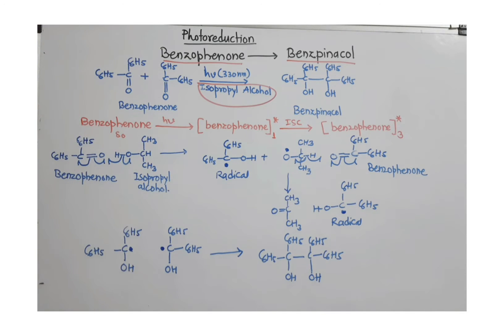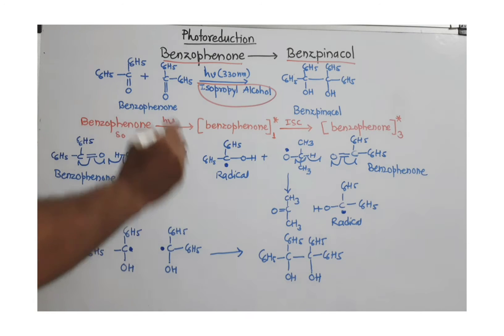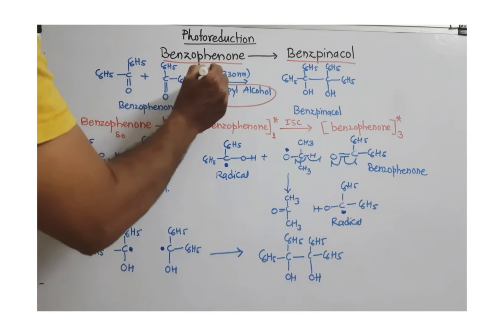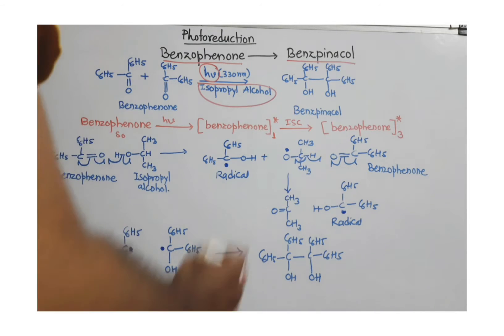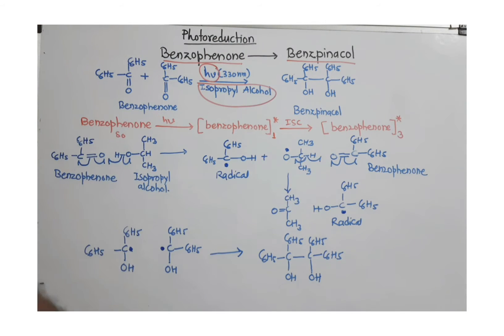Here isopropyl alcohol is working as a reducing agent and solvent. Now see, when benzophenone is irradiated with light of 330 nanometer in presence of isopropyl alcohol,